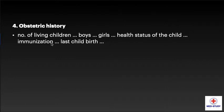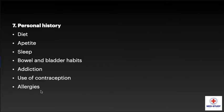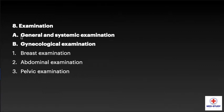Now coming to past history, we have to inquire about past medical as well as past surgical history. In family history, malignancy of breast, colon, ovary, or endometrium is often relevant. Tubercular affection of any family member can give a clue to the diagnosis of pelvic tuberculosis. Personal history includes diet, appetite, sleep, bowel and bladder habits, addiction, use of contraception, and allergies.